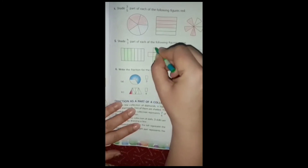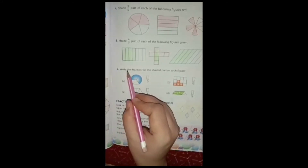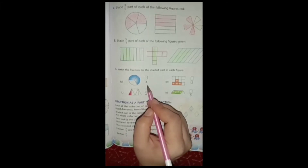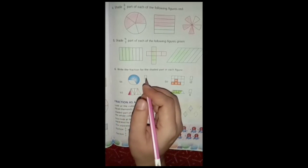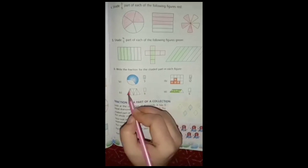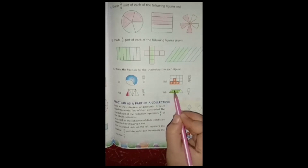You can use light or dark color, whatever you want. Question number 6: write the fraction for the shaded part in each figure. Shaded parts are written as numerator and total parts as denominator. Counting the first figure: 1, 2 — 2 parts are shaded. Next figure: 1, 2, 3, 4 — 4 are shaded out of 12 parts. Next figure: out of 6 equal parts, 1 part is shaded. Next figure: 1, 2, 3, 4 — out of 5 parts, 4 parts are shaded. Dear students, I hope you have understood exercise 6.5.